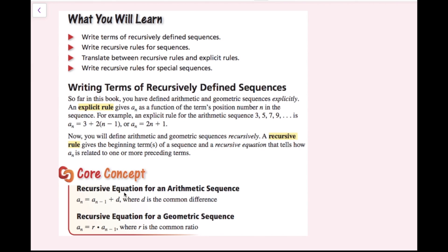For an arithmetic sequence, we have a sub n equals a sub n minus 1 plus d. A sub n minus 1 is just the term that comes before a sub n, and d is the common difference. For geometric sequences, we have a sub n equals r times a sub n minus 1. Once again, a sub n minus 1 is the term that comes before, and r is the common ratio, the number that is repeatedly multiplying.